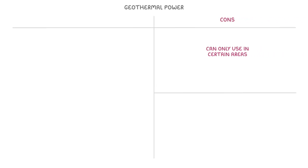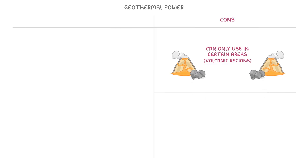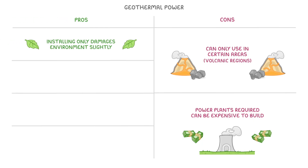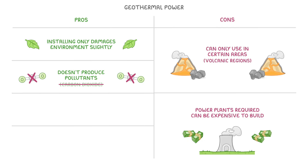Unfortunately, we can only use this source in certain areas, such as volcanic regions where hot rocks lie near the surface, and the power plants required can be quite expensive to build. Where it is available though, geothermal energy can be a great source of power, as installing the plant only damages the environment very slightly, and while running it doesn't produce any pollutants, like carbon dioxide.